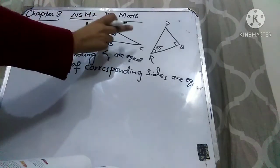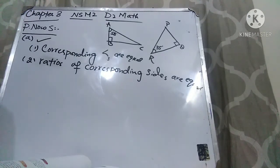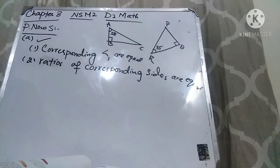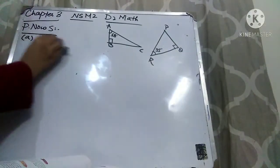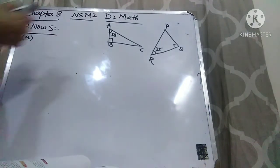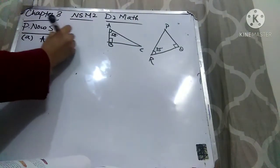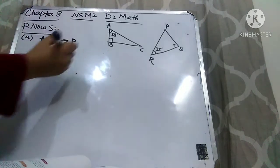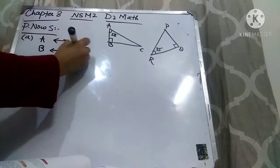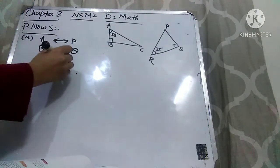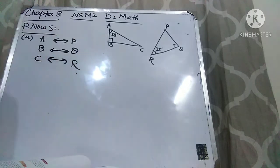Here you can see that in part A, angles are given. So we have to find out whether all corresponding angles are equal or not. If all corresponding angles are equal, it means the two figures are similar; if not, they are not similar. So let's find out the corresponding angles first. The corresponding angle of A is P, angle B is corresponding to Q, and angle C is corresponding to R.